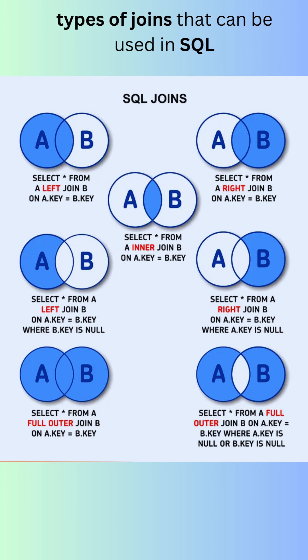A left join returns all rows from the left table, even if there are no matching rows in the right table. A right join returns all rows from the right table, even if there are no matching rows in the left table.